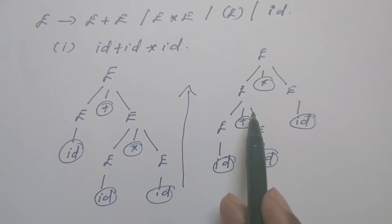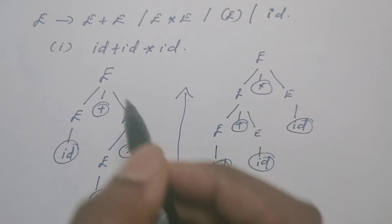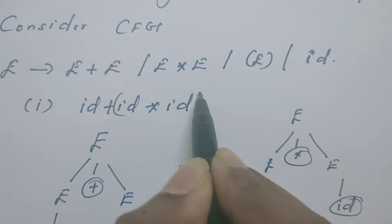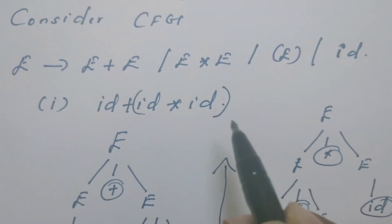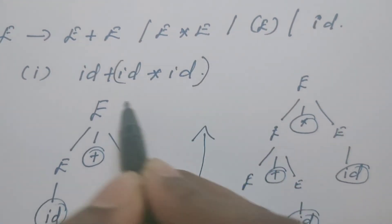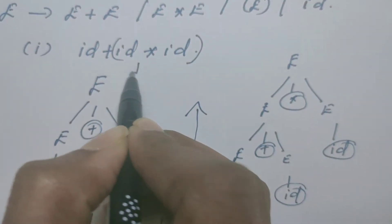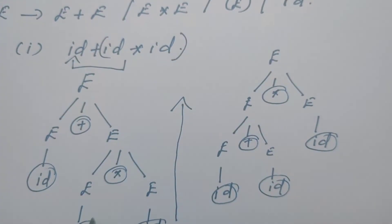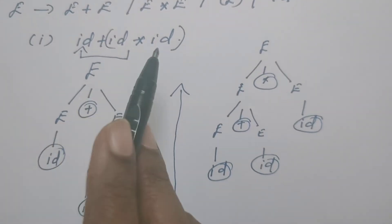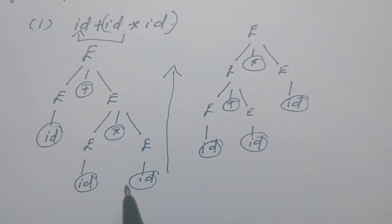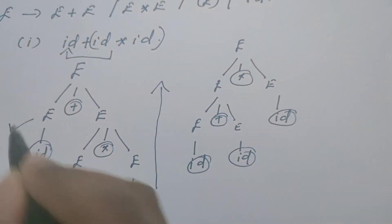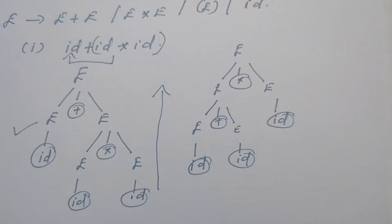But what has to happen in fact? ID star ID — the multiplication has to happen first and the result must be added with this ID. According to the BODMAS rule, this parse tree where star appears at the bottom is the valid one.